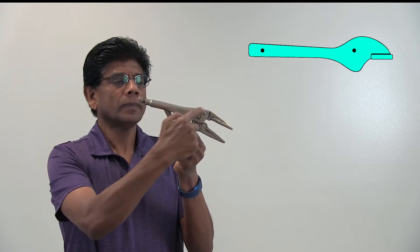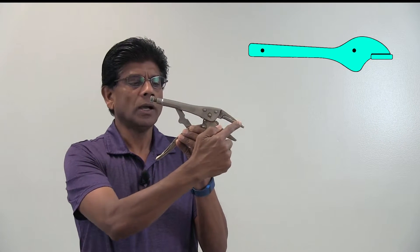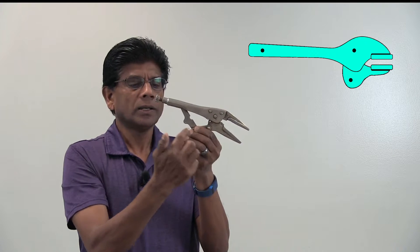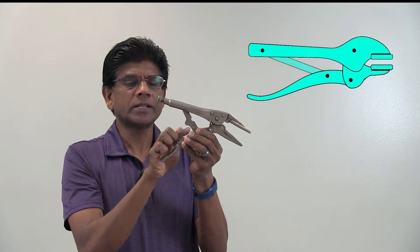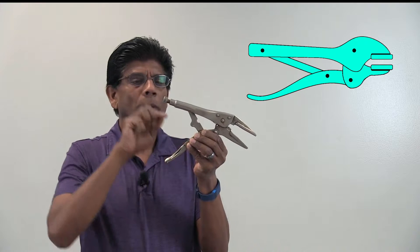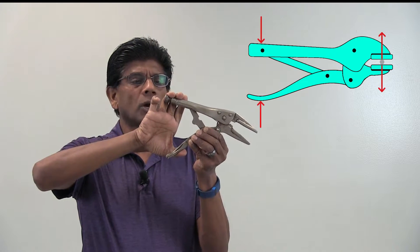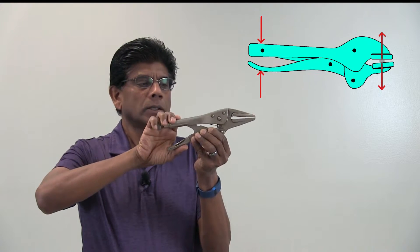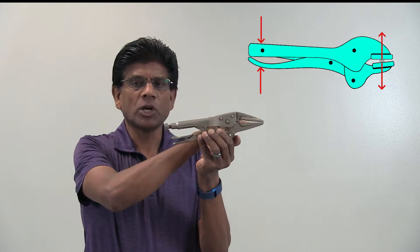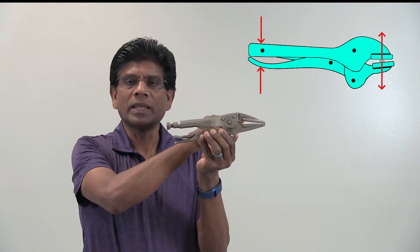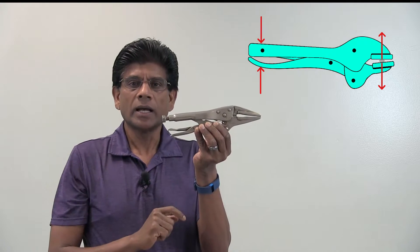In a locking player like this, you have an upper handle connected to the upper jaw. There is a lower jaw and a lower handle and a connecting rod. There are basically four members and when we apply a force on the handles, a force is developed between the jaws to hold something in place.